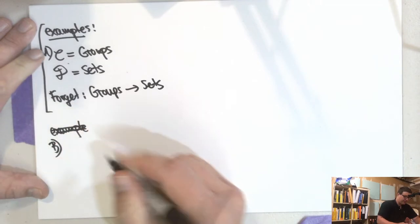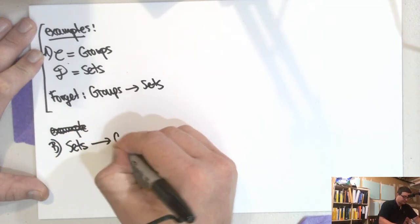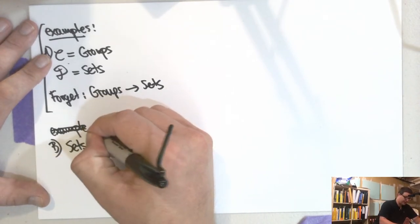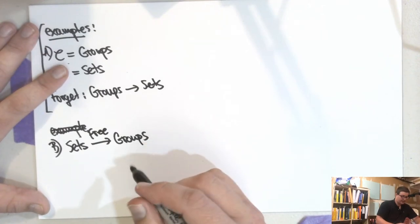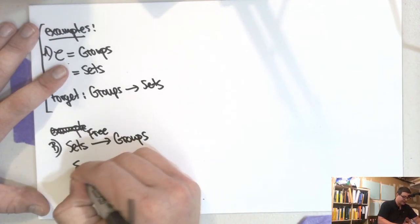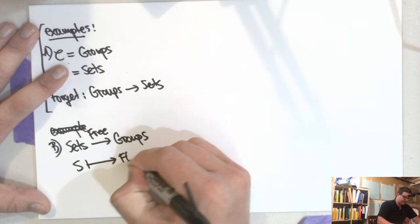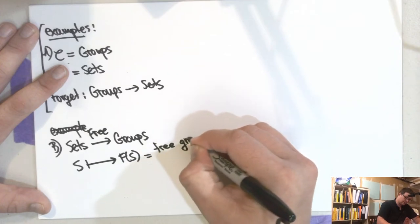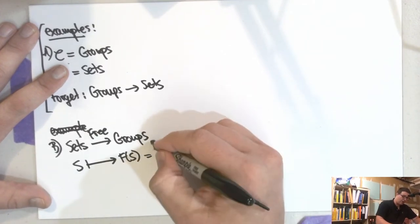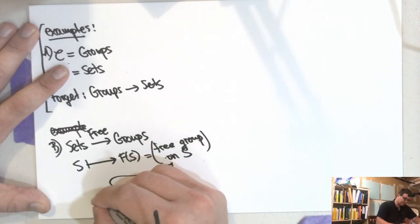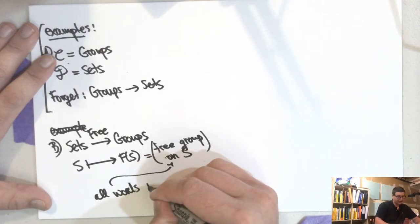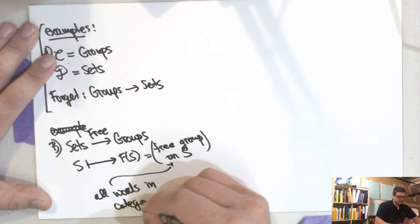There's also a functor going the other way: the free functor from Sets to Groups. It takes a set S and maps it to the free group F(S) — all words you can write using elements of S, their inverses, and an identity element.